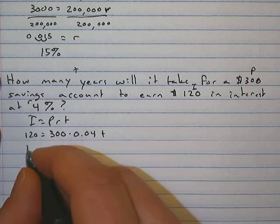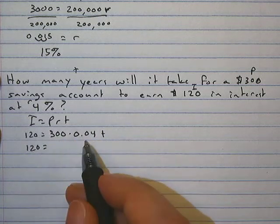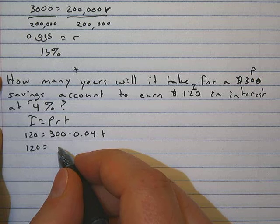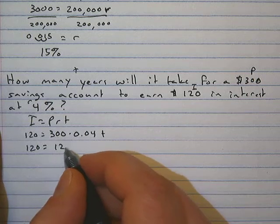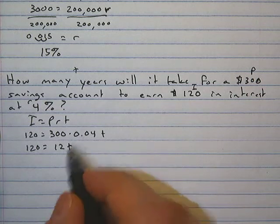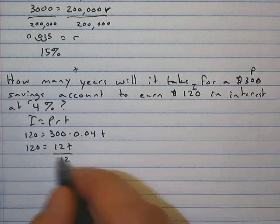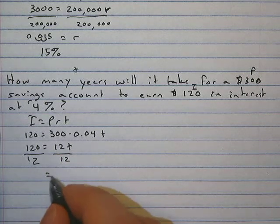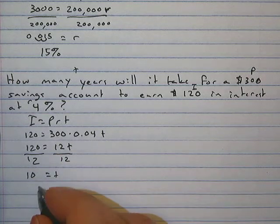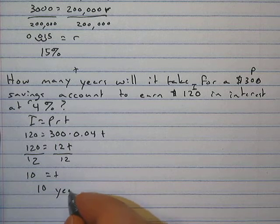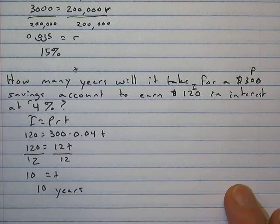And then times what we're looking for. And then we just calculate. So 120, we have 300 times 0.04 is equal to 12. So 12T, we isolate the variable by dividing both sides by our coefficient of 12. We get T equals 10.